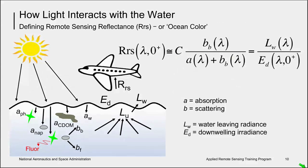Last week we reviewed how light interacts with the constituents in the water column and may be re-emitted through the sea surface and sensed by an airborne or satellite sensor. In aquatic remote sensing, we are interested in the radiometric unit remote sensing reflectance, seen here as RRS. Remote sensing reflectance is used in ocean color algorithms to compute the data products of interest for ocean and aquatic science, like chlorophyll concentration or colored dissolved organic matter.